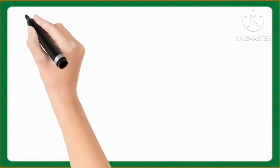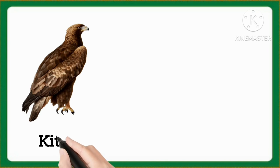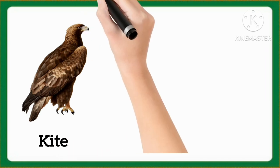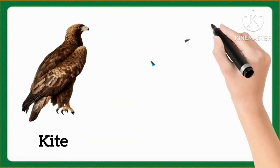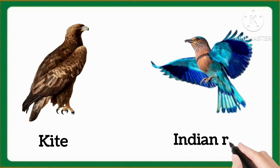And now tell me which word is this, kids? This is kite. Kite. And which word is this, kids? This is indian roller. Indian roller.